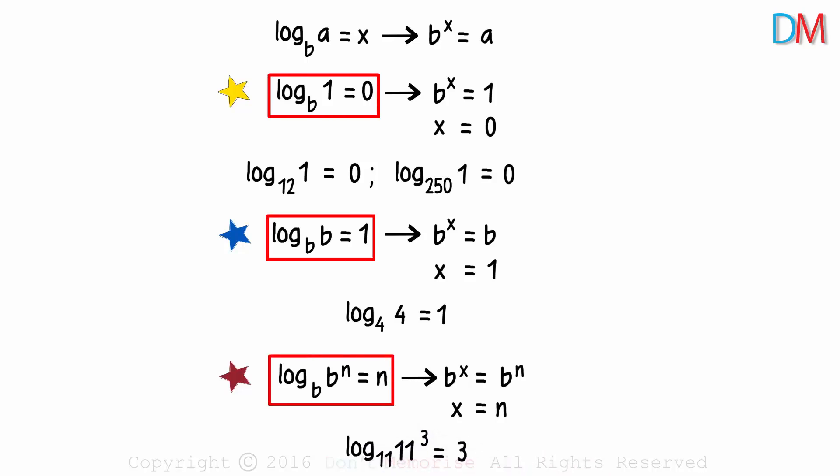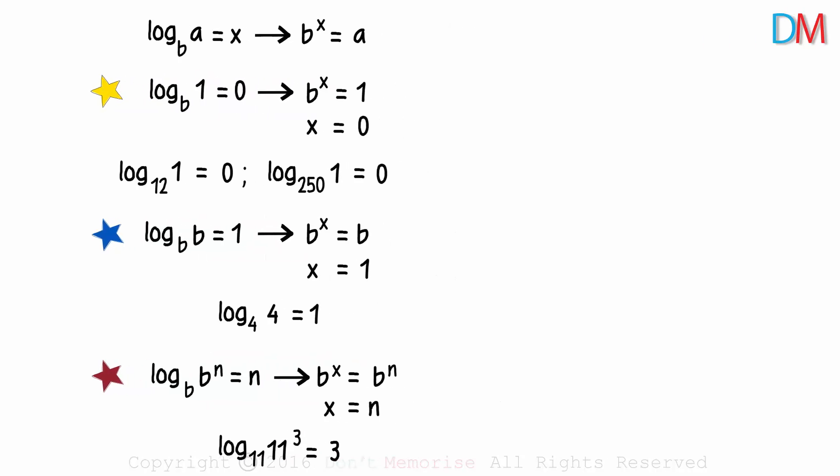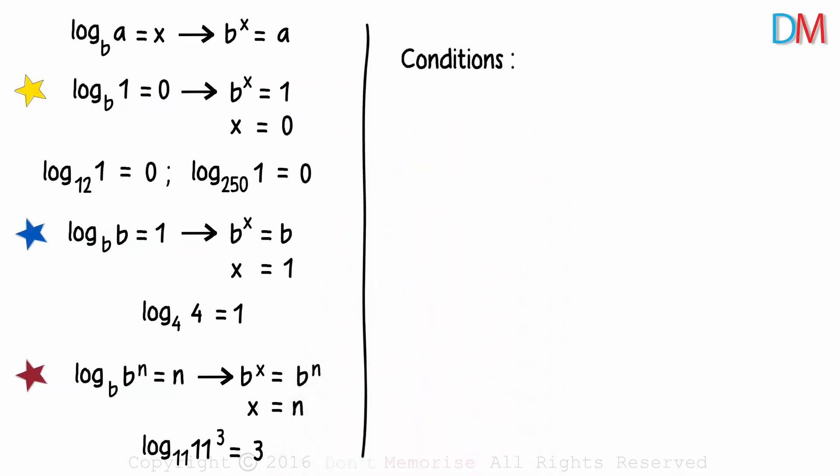So these are the three fundamental properties of logarithms. And we don't really need to remember these, as they can be easily derived. Along with the properties, there are a few conditions we need to know about. Let's see them on the right side of the board. The basic form of logarithm is written like this, where a is the argument and b is the base. Now for this to be valid, there are a few conditions about a and b that we need to know.